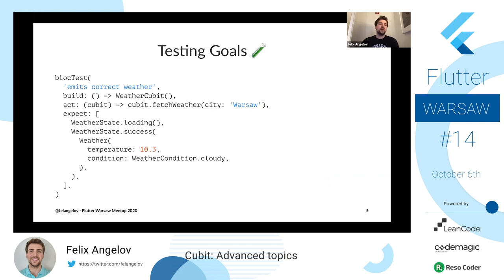In the context of this talk, we're going to be building some sort of weather application. We'll have simple functionality where we can fetch weather for a given city — let's say Warsaw — and we want to have a weather cubit that returns the weather. So let's say it's 10.3 degrees and cloudy. How do we know the temperature is 10.3 degrees and cloudy, and how about if I run this test tomorrow — will it still be 10.3 degrees?